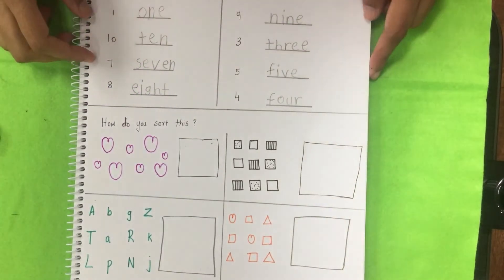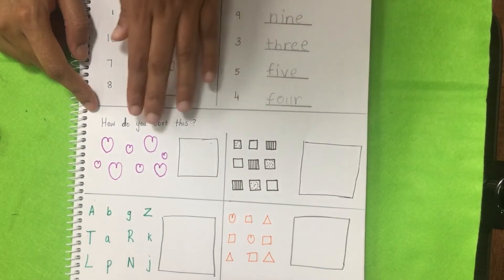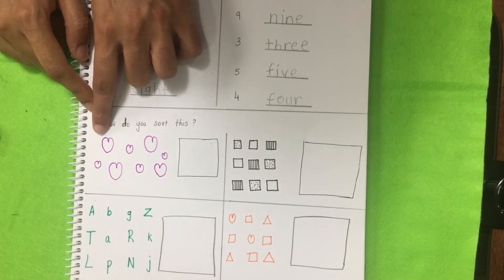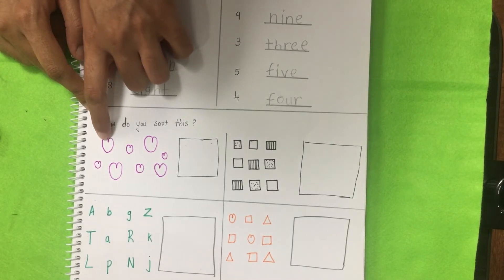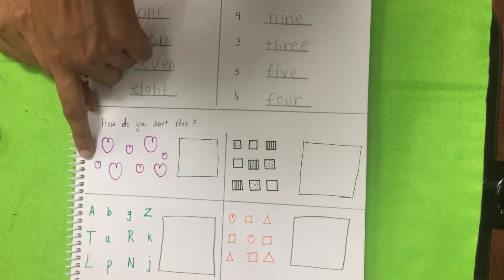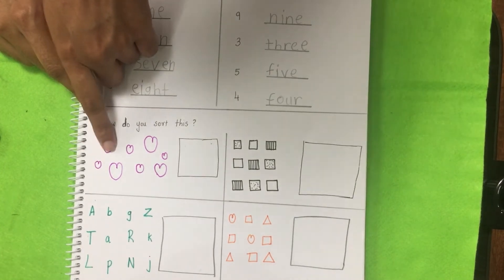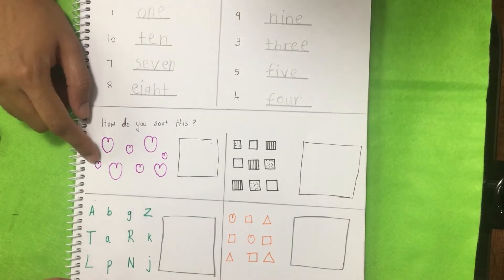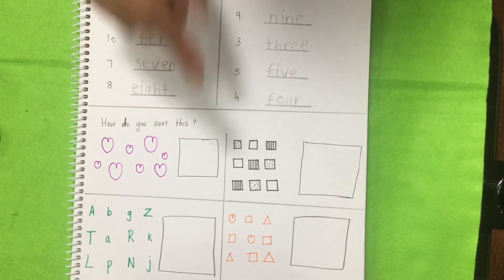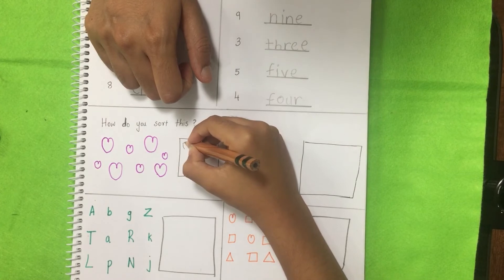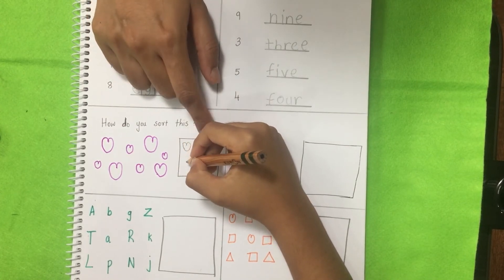The next activity is sorting activity. I have made few shapes here, and he needs to find a way to sort it out. For example, I have made bigger hearts and smaller hearts, so he has to sort big versus small. Okay? Yeah. So this one is big heart versus small heart. I will sort it like big and small. Here you need to draw one big heart and one small here.